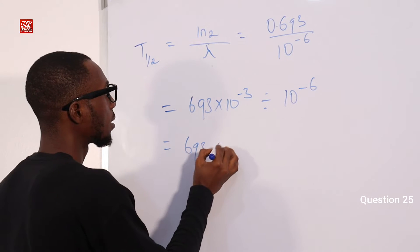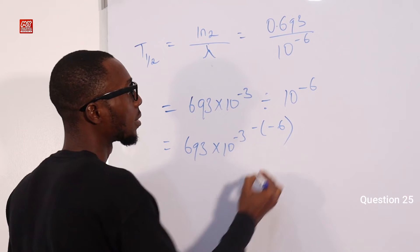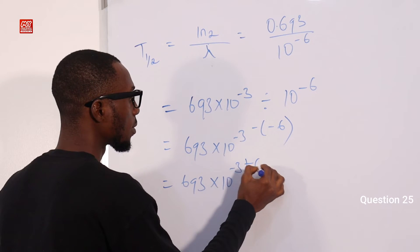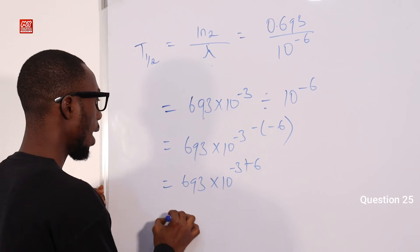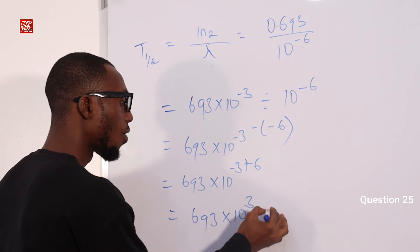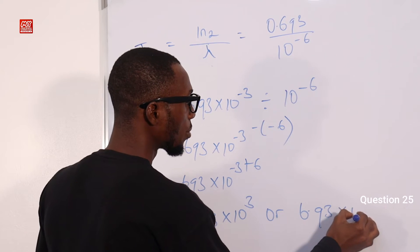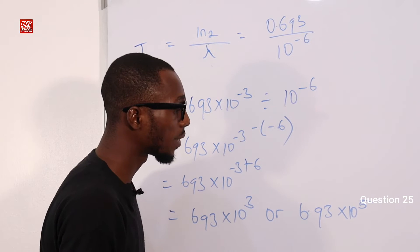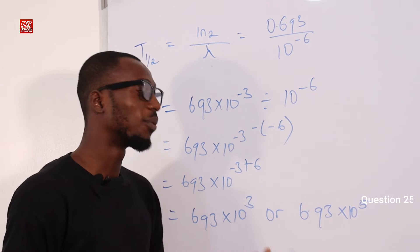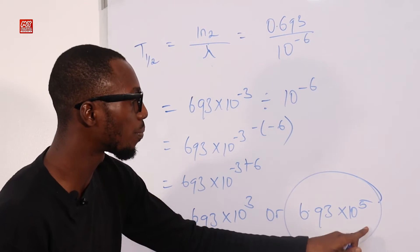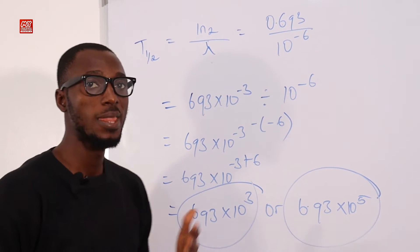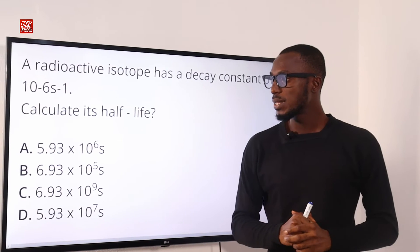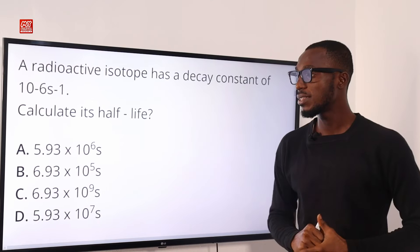So we have 693 times 10 raised to the power minus 3, divided by 10 raised to the power minus 6. Minus times minus gives plus, so minus 3 plus 6 gives 3. That gives 693 times 10 raised to power 3, or equivalently 6.93 times 10 raised to power 5. The half-life is found in option B: 6.93 times 10 raised to power 5.